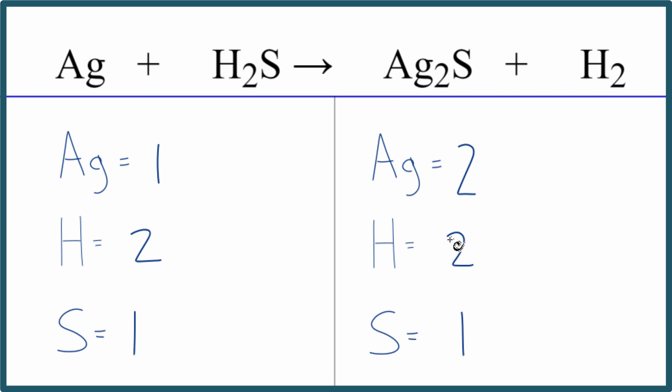That's kind of nice because all we need to do at this point is put a coefficient of two in front of the silver. So we have the one, it's not written but we assume there's the one here, times the two. That'll give us two.